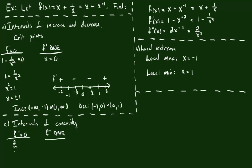If the second derivative equals 0, that means 2 over x cubed equals 0. Multiplying both sides by x cubed gives 2 equals 0, which is impossible — so there is no x value that makes the second derivative equal to 0. The second derivative can fail to exist at x equals 0, so that's our only transition point. These are the only places where you could change from a positive to a negative second derivative.